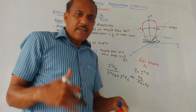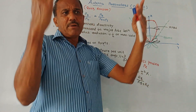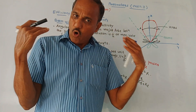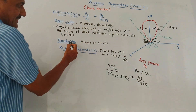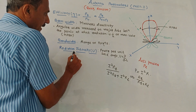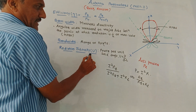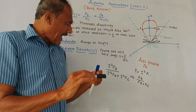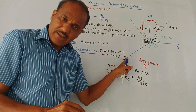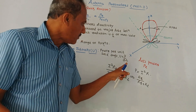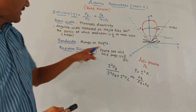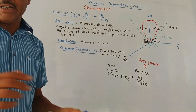Next is bandwidth. There is a particular range of frequencies over which a given antenna operates — this represents the bandwidth. Next is radiation intensity, defined as power per unit solid angle. Power is P-bar and solid angle is d-omega. So power per unit solid angle of an antenna is called radiation intensity.